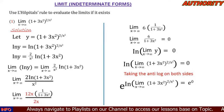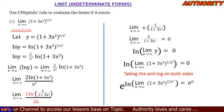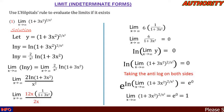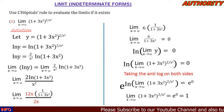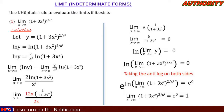Taking the anti-log: e raised to the power ln of (limit as x approaches infinity of (1 + 3x²) raised to the power 2 over x squared) equals e raised to the power 0. The exponential and ln cancel each other, so the limit as x approaches infinity of (1 + 3x²)^(2/x²) equals e^0, which equals 1. We have evaluated the limit and found it equals 1. Let's take more examples.